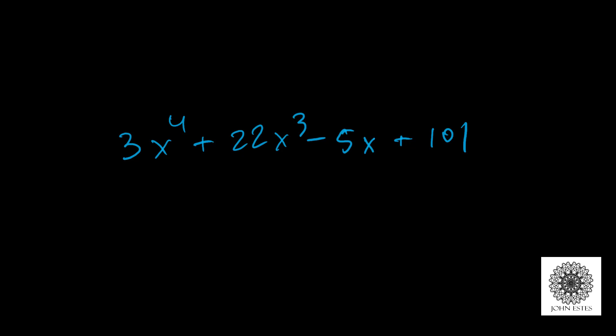As my example here, I have 3x to the 4th plus 22x cubed minus 5x plus 101, and I want to point out some things. First of all, you can notice there are segments in this thing that are separated by pluses and minuses. These segments are what I call my terms. So this polynomial here has four terms.